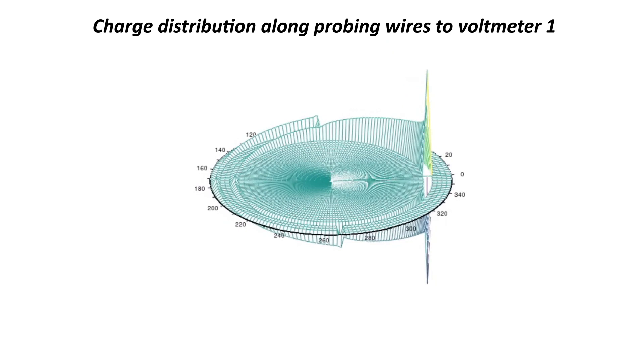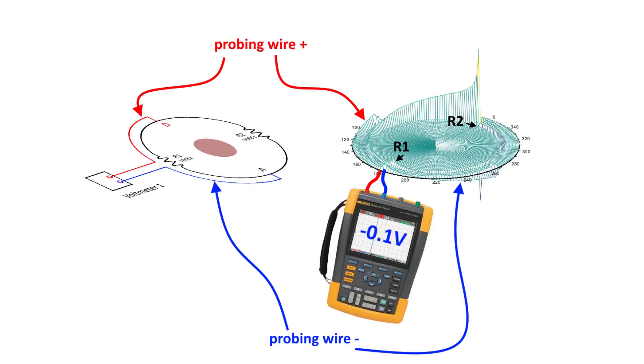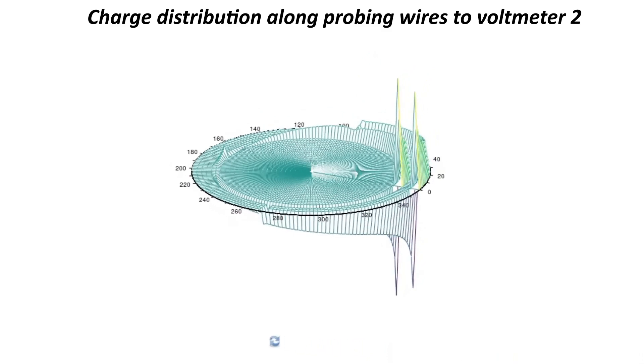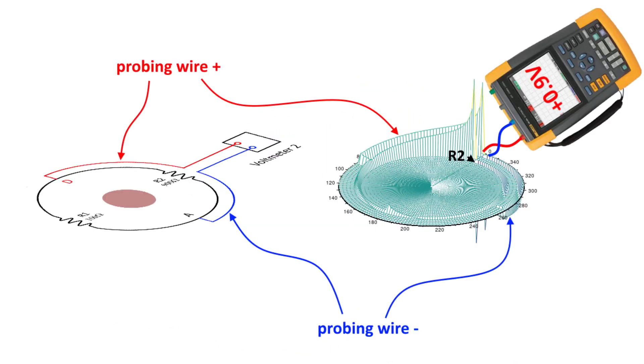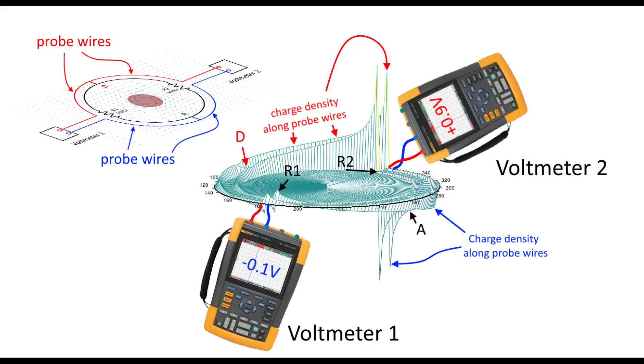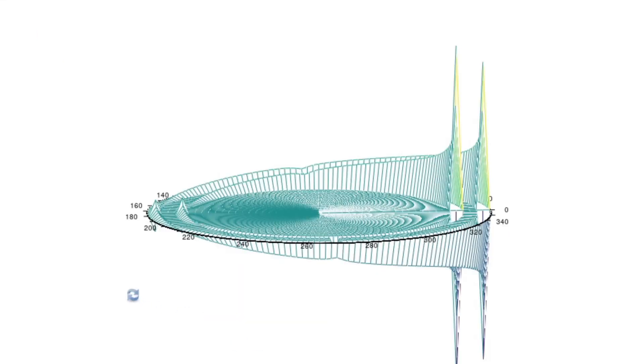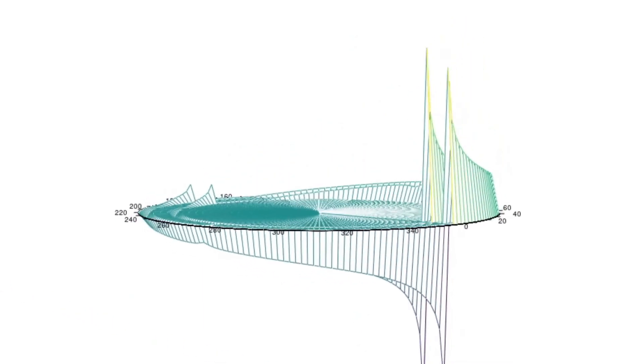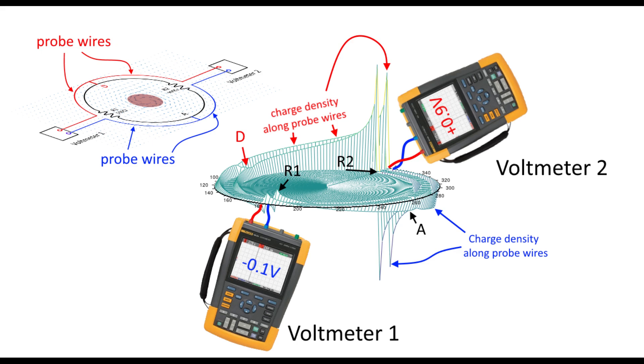From D and A to voltmeter 1, it has the same profile as the charge distribution from D and A to R1. Likewise, this is the charge distribution for the probing wires to voltmeter 2, and having the same profile as D and A to R2. When both voltmeters are probing at the same time, we can easily see that voltmeter 2 reads a higher value than voltmeter 1. We can interpret that the meters read the voltage at their input points, not across D and A, and with different amounts of charge accumulation, it is no surprise that M1 and M2 have different readings.